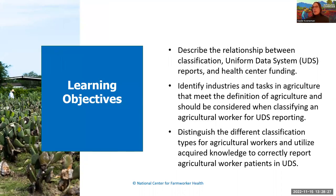Today we're going to be covering three main learning objectives. By the end of the session, you'll be able to describe the relationship between classification, the Uniform Data System (UDS) reports, and health center funding; identify industries and tasks in agriculture that meet the definition of agriculture; and distinguish the different classification types for agricultural workers and utilize this knowledge to correctly report agricultural worker patients in the UDS.